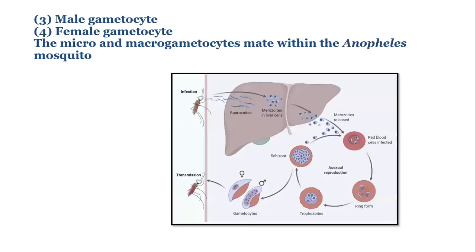Next we have option number three, female gametocyte, and option number four, male gametocyte. Gametocyte is the first stage of the life cycle of plasmodium. The female gametocyte or macro gametocyte and the male or micro gametocyte undergo mating and form the sporozoid. This mating occurs within the female Anopheles mosquito.